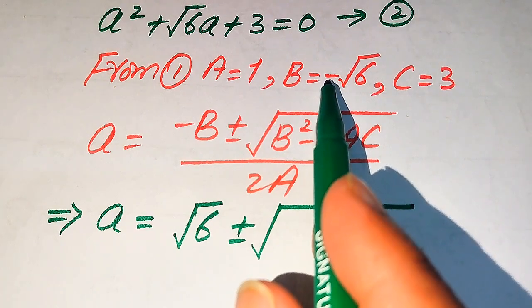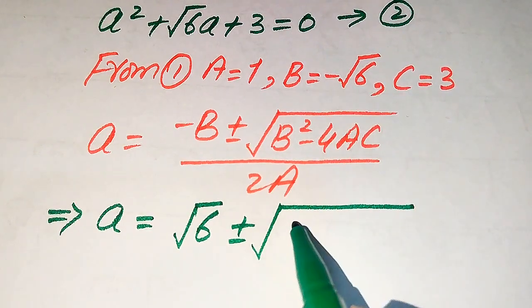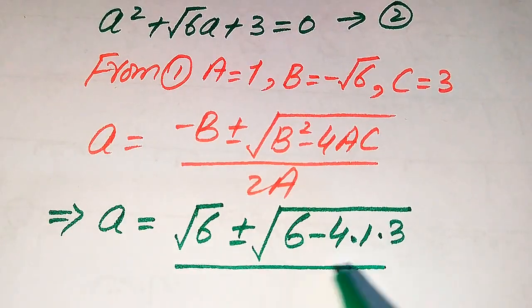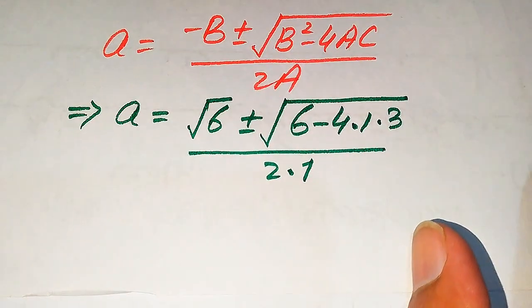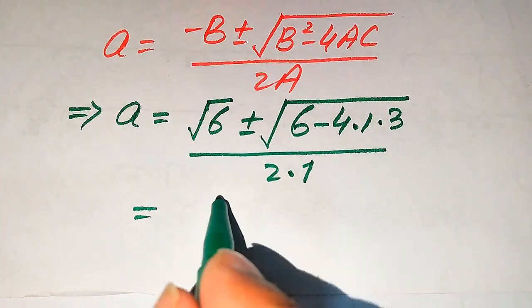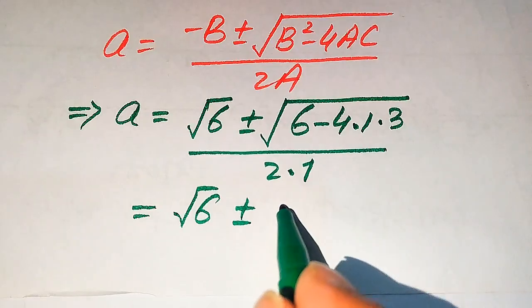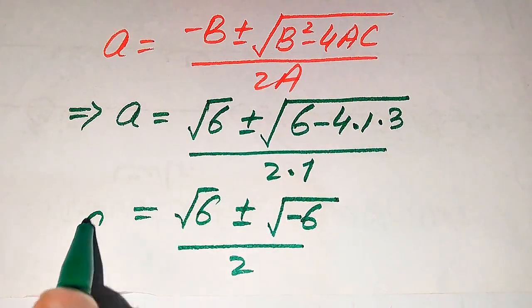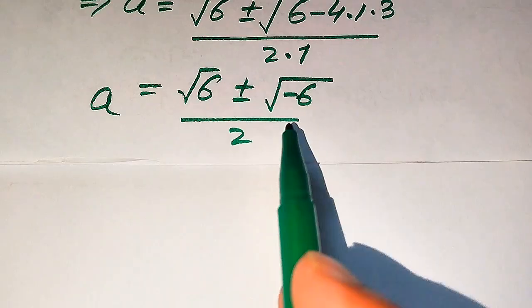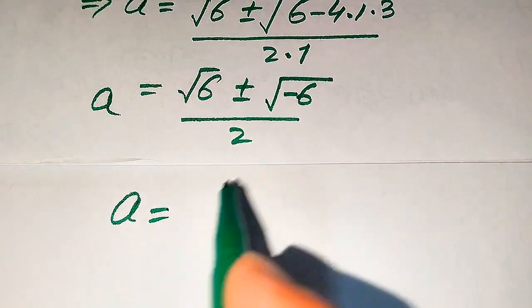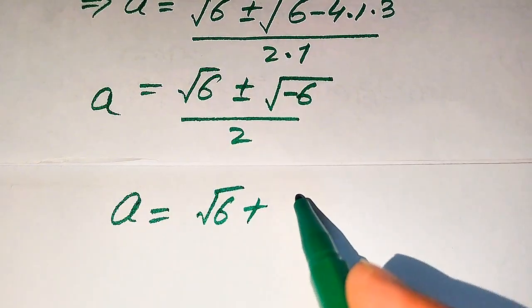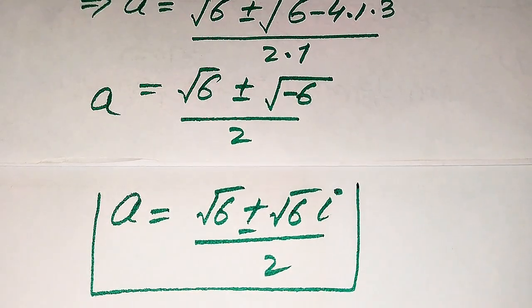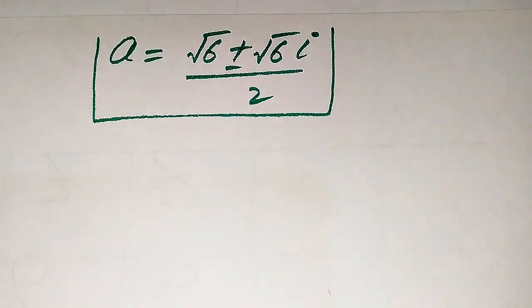The square of −√6 becomes positive 6, and 4 times 1 times 3 is 12, so 6 − 12 = −6. Since a negative sign appears inside the square root, it becomes iota (i), giving us [√6 ± √6·i] / 2. These are the first two complex roots from equation 1.